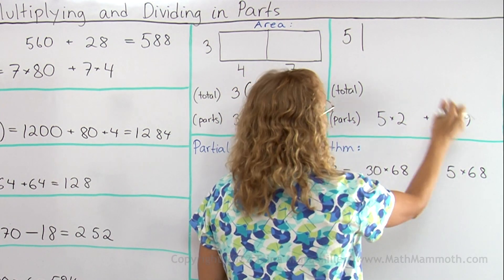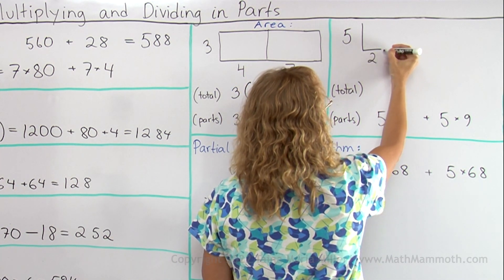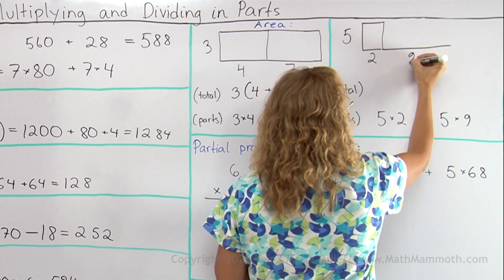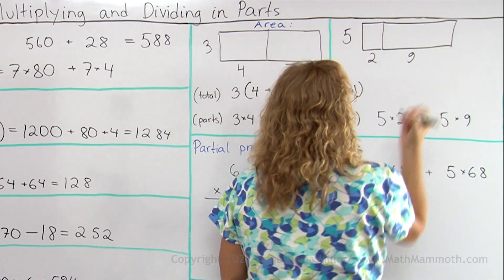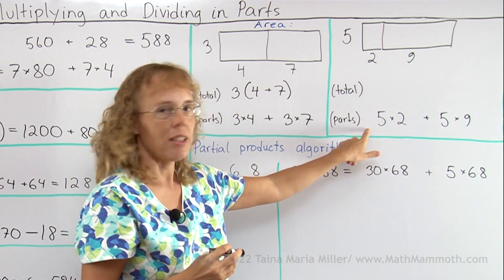And then the other two sides are 2. Let's make it short. And then 9, like that. So here's my rectangle model for this particular multiplication.